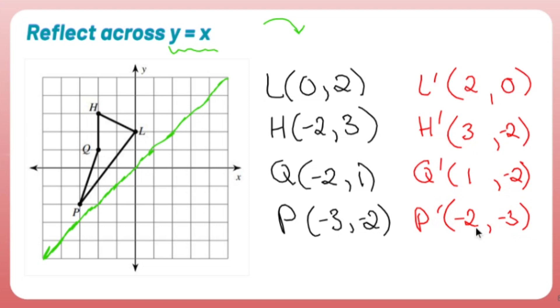I take these guys and graph them out. L prime, let's go to my origin, is right two. Don't go up or down. L prime. H prime is right three, down two. Put a dot there. H prime.